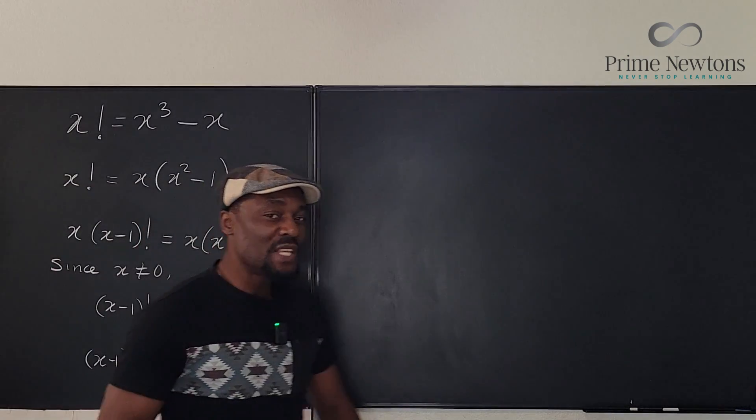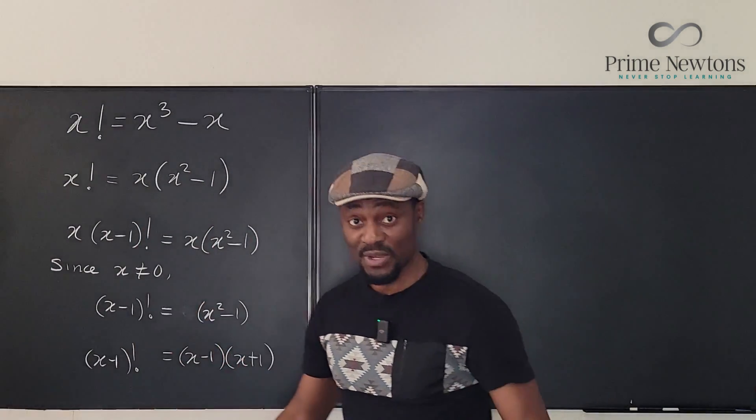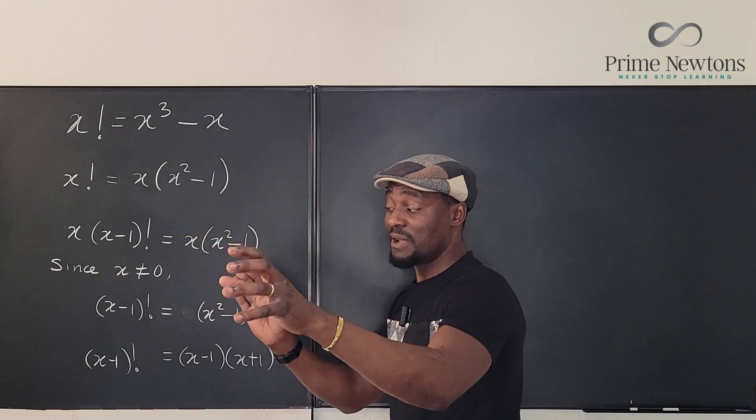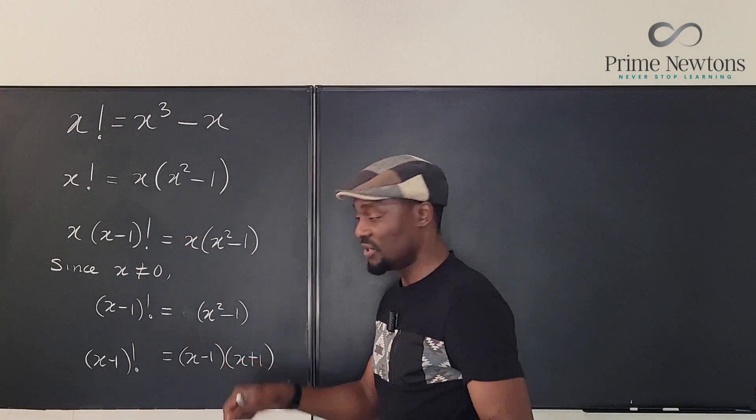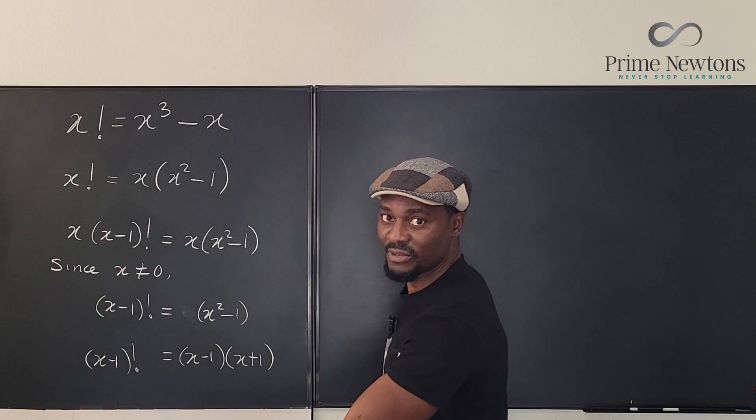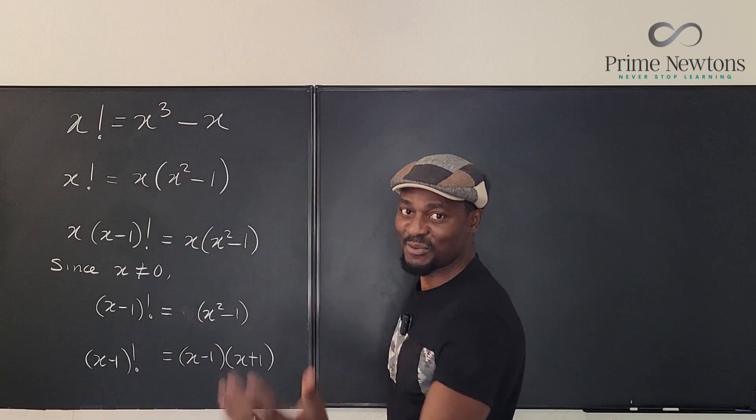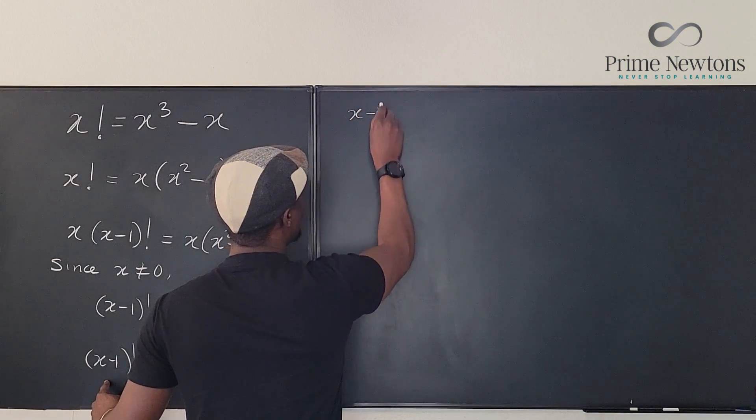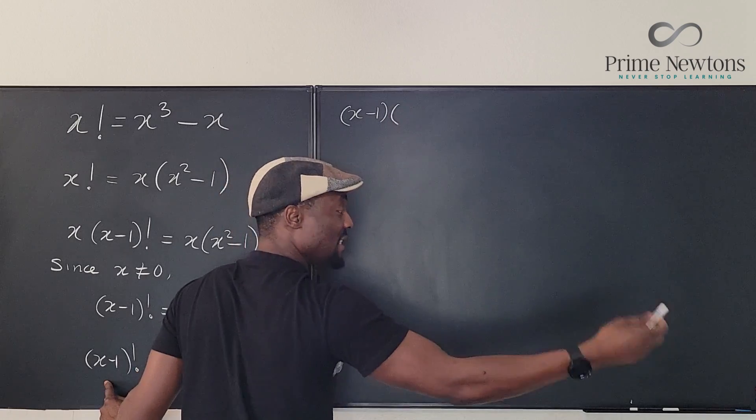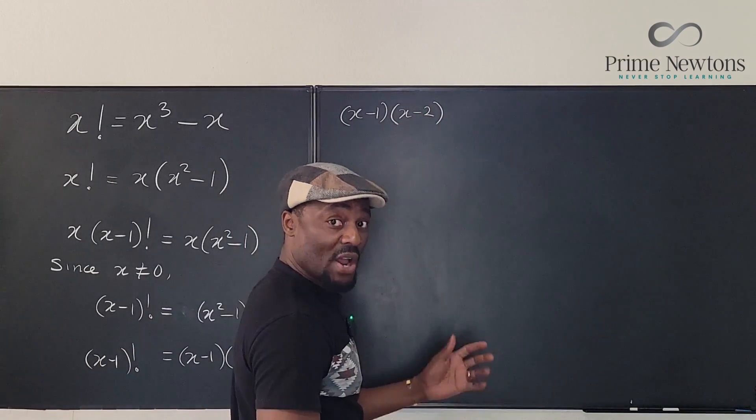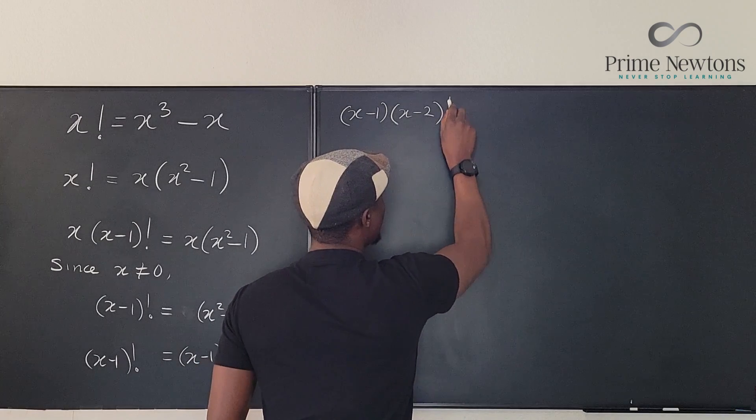And remember what we said about factorials. You start from the first number and then you multiply it by a number less than the first number. So if you subtract 1 from x minus 1, you're going to go to x minus 2. Then x minus 3, then x minus 4. So we can rewrite the left hand side as x minus 1 times the next number less by 1. That's going to be x minus 2 factorial. You can keep going. We're not interested. We just want this to end here.